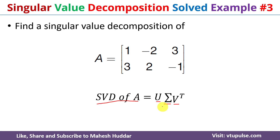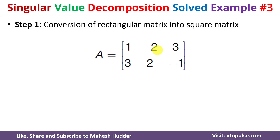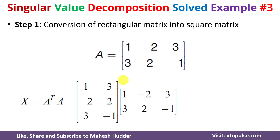Now we will find each of these matrices. The given matrix is rectangular, but for singular value decomposition the matrix must be in square form. First we will convert this rectangular matrix into a square matrix using the formula x equals transpose of A times A.